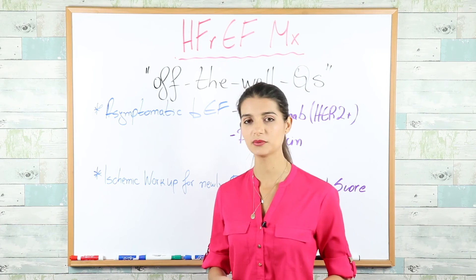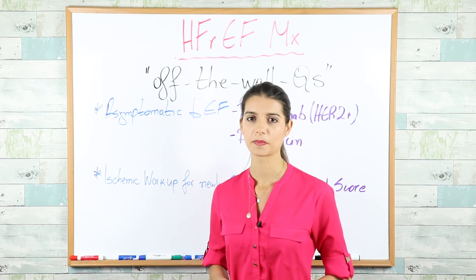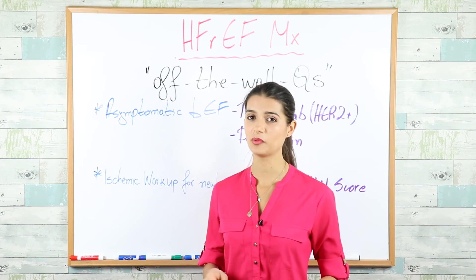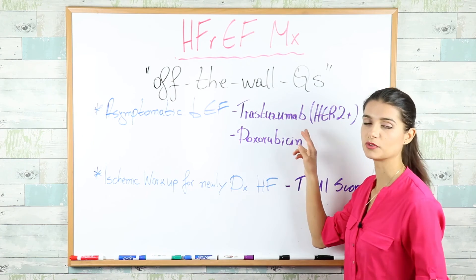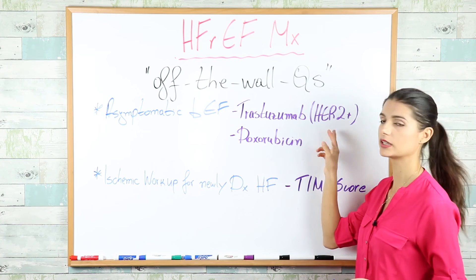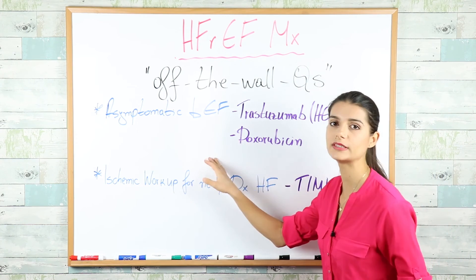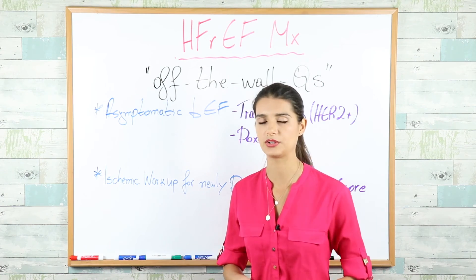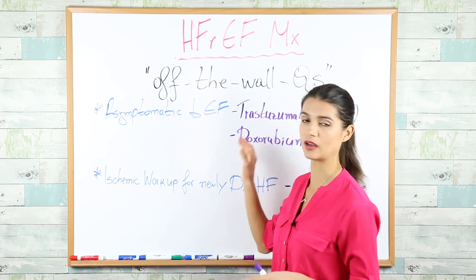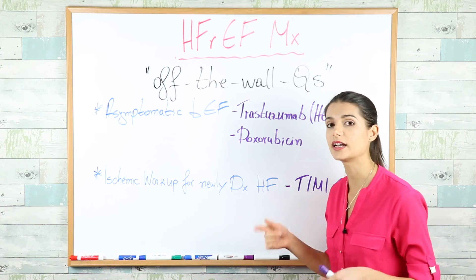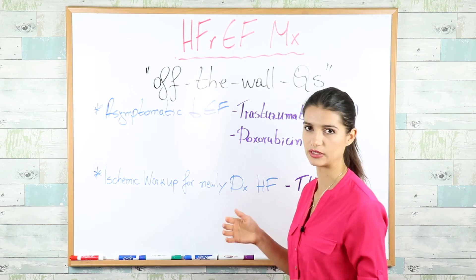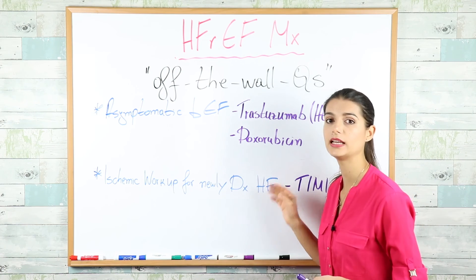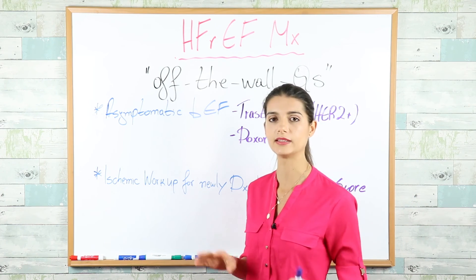Board-favorite: asymptomatic decrease in ejection fraction or new-onset unexplained heart failure — look for a chemotherapeutic agent. Trastuzumab, a monoclonal antibody used for HER2-positive cancers (most commonly breast cancer), can cause reversible myocardial hibernation — stop the drug and heart function returns to normal, no additional treatment needed. Combining trastuzumab with anthracyclines like doxorubicin or cyclophosphamide increases cardiac toxicity. Chronic high-dose doxorubicin (also called adriamycin) alone causes irreversible cardiomyocyte fibrosis and necrosis.